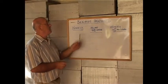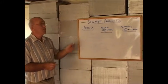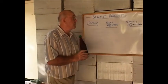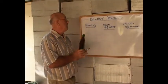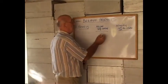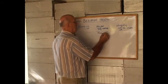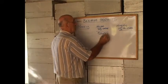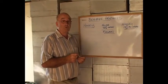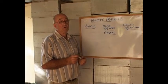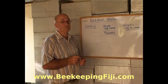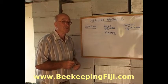This time we want to cover beehive products. The first one we'll look at is honey - that's the most common product of the beehive. Honey is derived from nectar, which is gathered from nectar-bearing flowers. Not all flowers produce nectar, but some do, and the nectar is there as an attractant to encourage bees to come to the flowers, which in the process causes pollination.